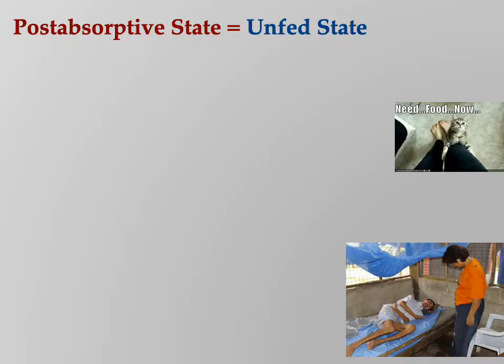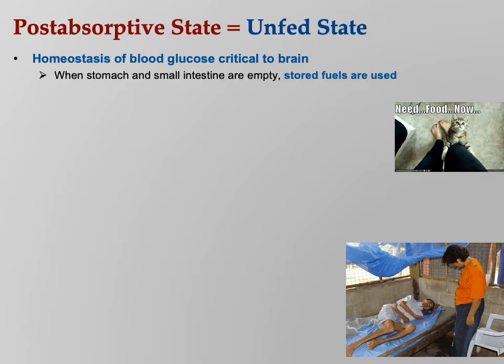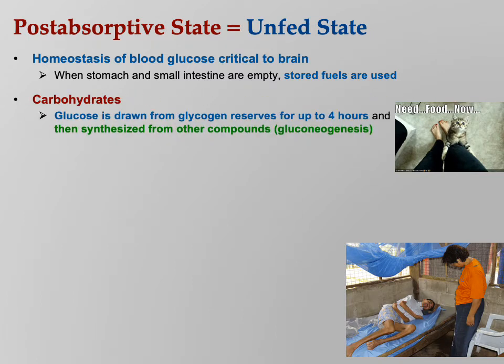The post-absorptive state, or the unfed state — this is where homeostasis of blood glucose is critical for the brain. Since you're not eating, you've got to make glucose available in your blood for your brain to use. We have to use our stored fuels. For carbs, glucose is drawn from glycogen reserves for up to four hours and then synthesized from other compounds — that would be gluconeogenesis.